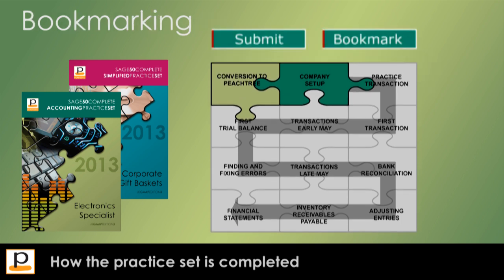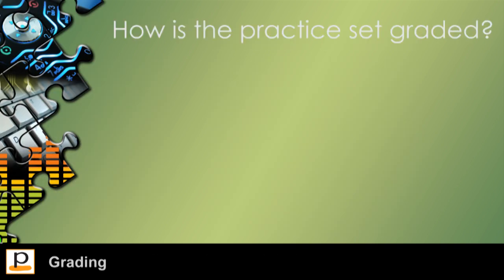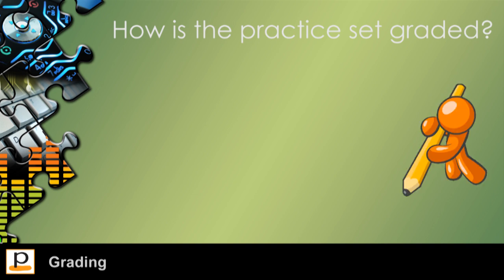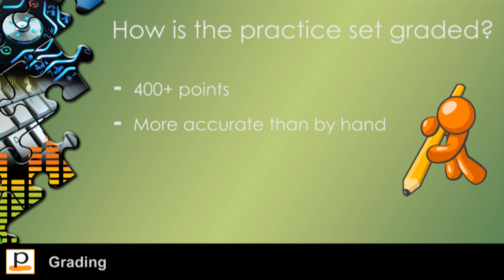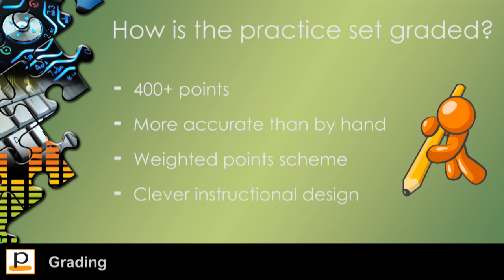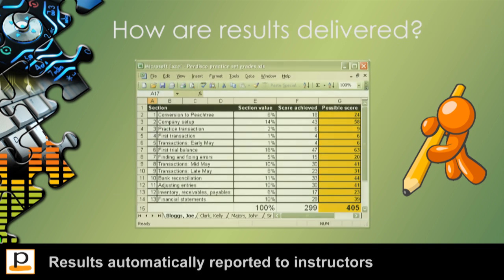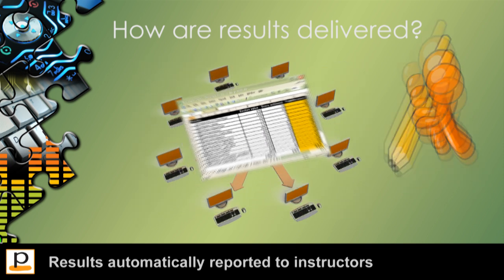After completing a page, students can bookmark their current position so that they can return to it at a later time. So, how is the practice set graded? Well, it's all done for you. Our Electronic Specialist set is graded out of over 400 points, providing a much more accurate picture of a student's performance than is possible with manual grading. The points are weighted by our instructional designers to reflect each item's level of difficulty and the frequency with which students have already completed similar items. To ensure transparency, detailed student results are delivered to instructors as an Excel spreadsheet that can also be integrated with your university's course management system.